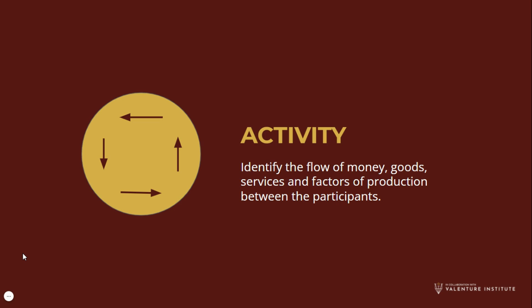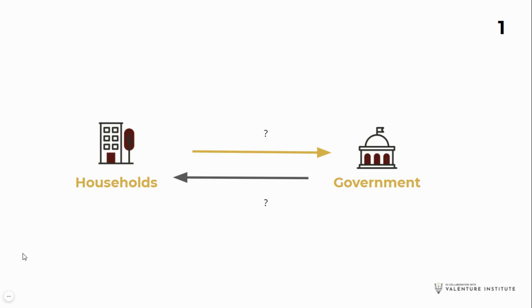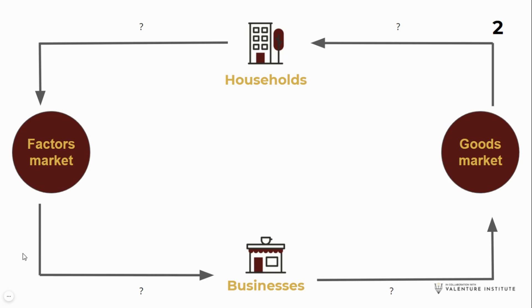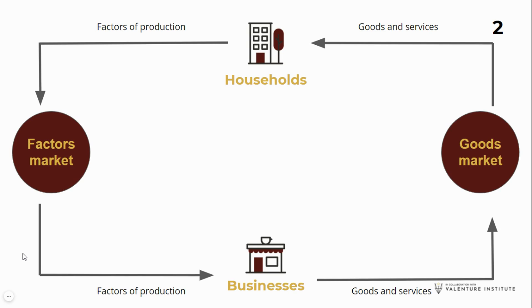Let's do this activity. Questions will pop up, and in order for the video to continue, you will first need to answer them. The activity requires you to identify the flow of money, goods and services, and factors of production between the participants. The first flow to identify is what flows between households and the government and vice versa. Tax flows from households to the government, and public goods and services flow from the government to households. Factors of production flow from households through the factors market to businesses, and goods and services flow from businesses through the goods market to households.